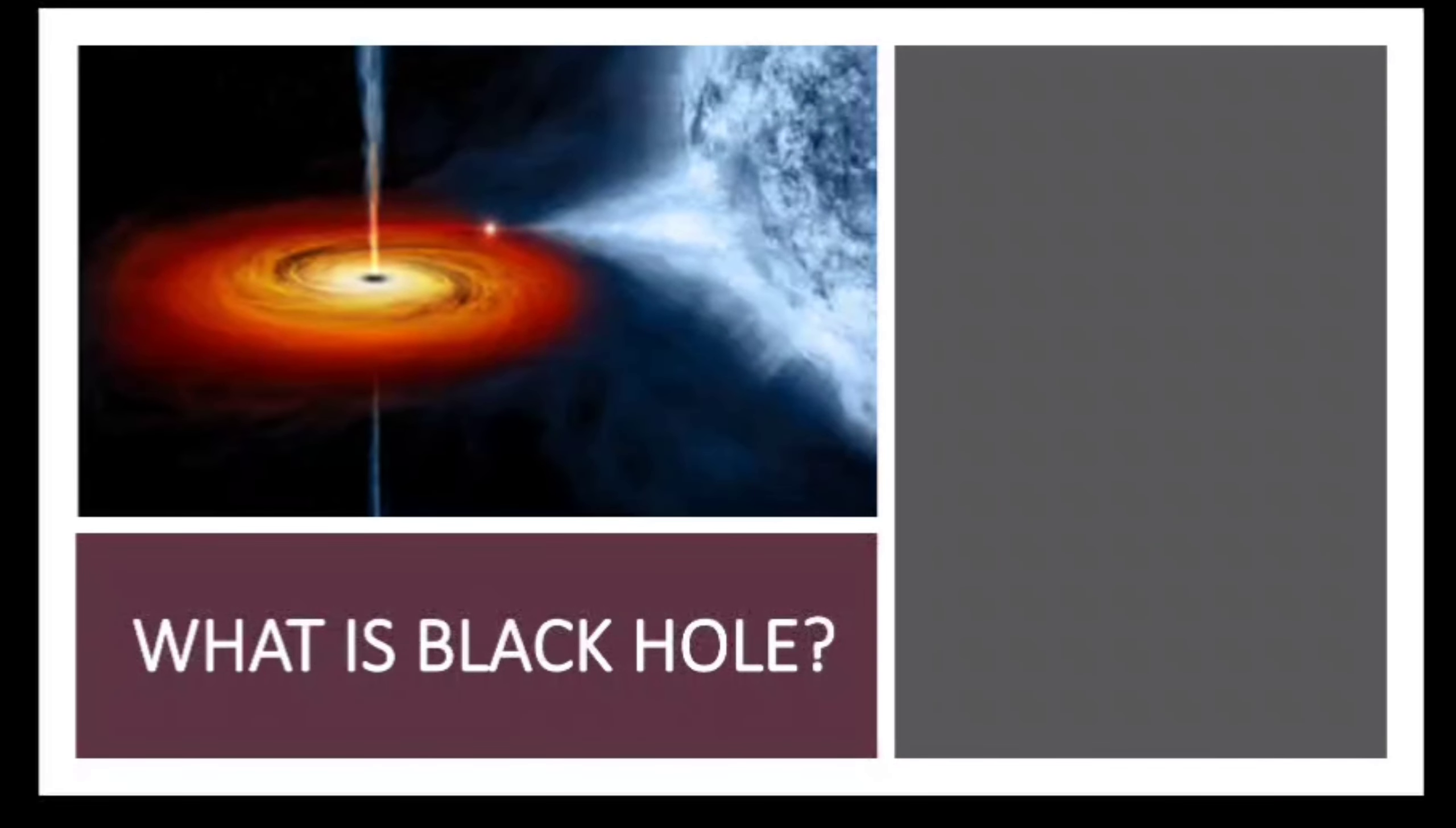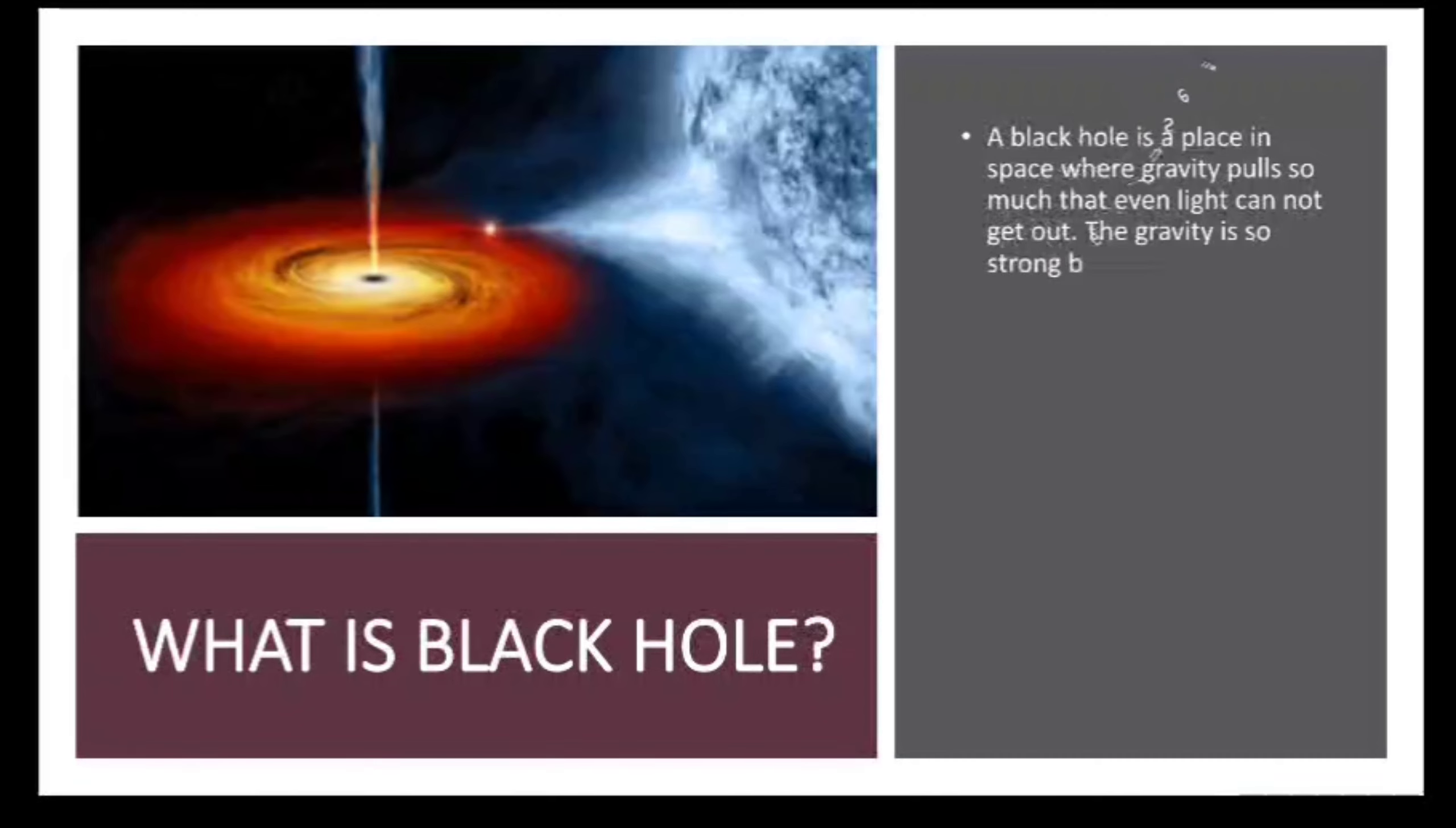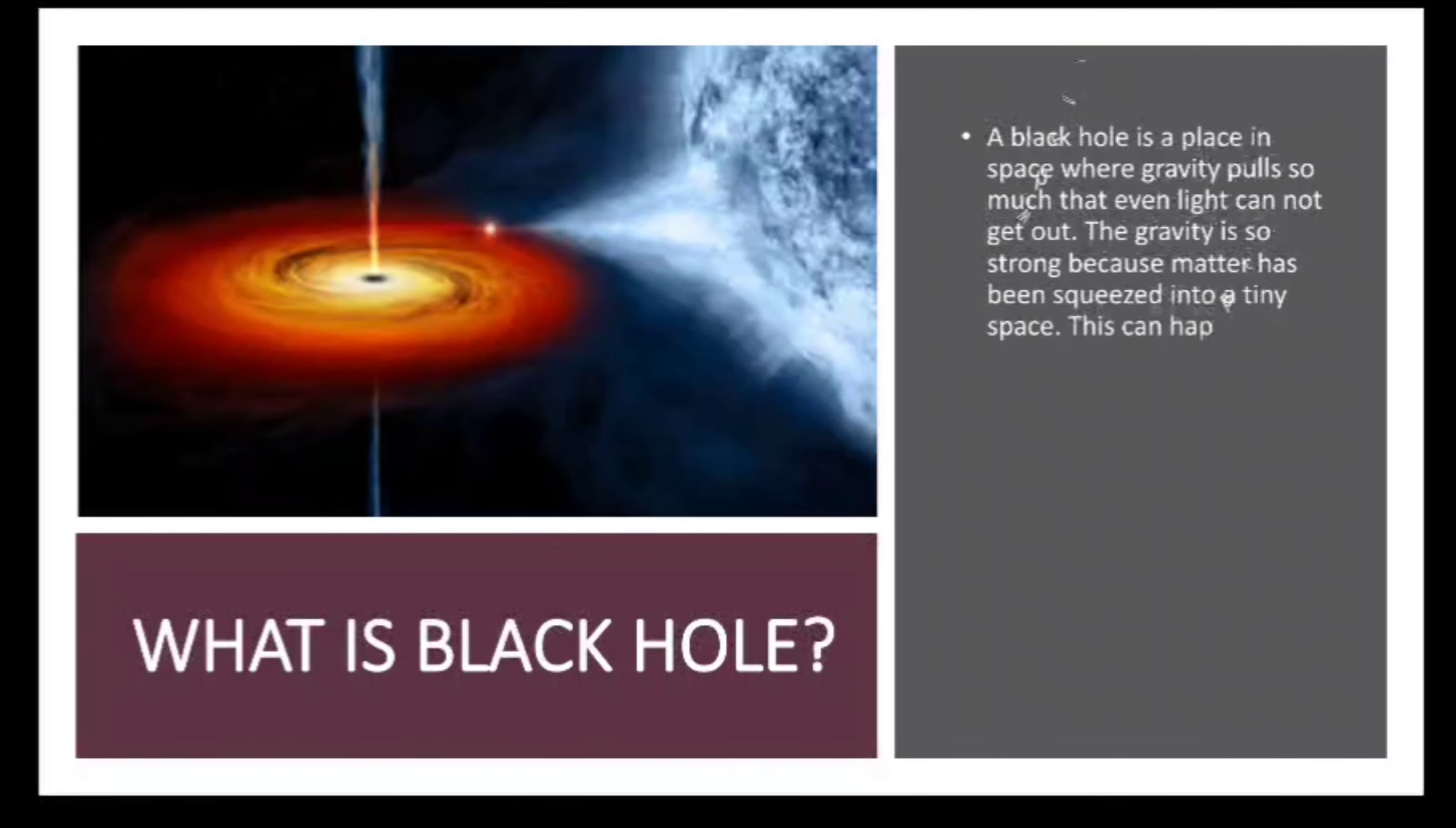What is a black hole? A black hole is a place in space where gravity pulls so much that even light cannot get out. The gravity is so strong because matter has been squeezed into a tiny space. This can happen when a star is dying. Because no light can get out, people can't see black holes. They are invisible.